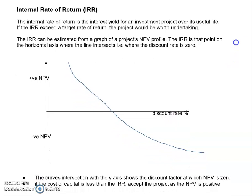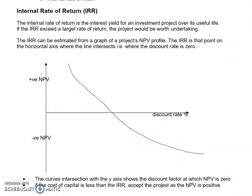It's best to visualise the internal rate of return on a graph, because it looks at the interest yield for an investment project over the whole life of the project. If our internal rate of return exceeds a target rate of return, then the project has got a positive net present value and is worth undertaking. If the cost of capital for a business is greater than the internal rate of return, then the NPV is going to be negative and the project is not going to be worthwhile.